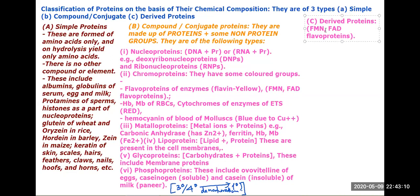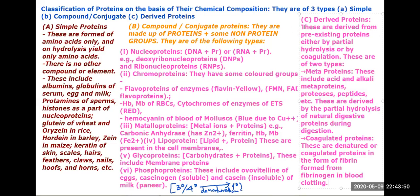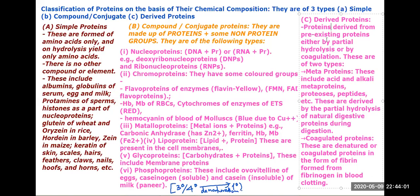The third category is derived proteins. Derived proteins are proteins made from proteins — specifically, they are derived from pre-existing proteins.